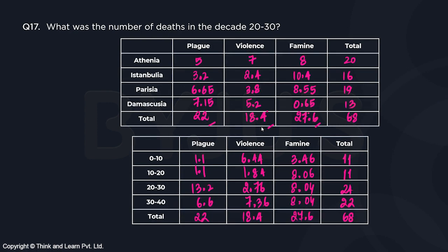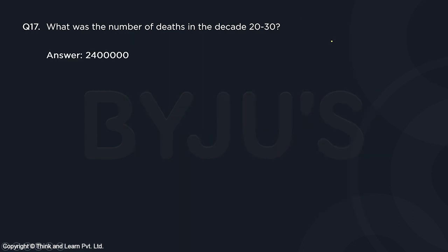Question 17: What was the number of deaths in the decade 20 to 30? The total deaths in decade 20 to 30 are 24 lakh. Since this is a TITA question, do not forget to enter five zeros — the answer is 24 followed by five zeros, i.e., 2,400,000.